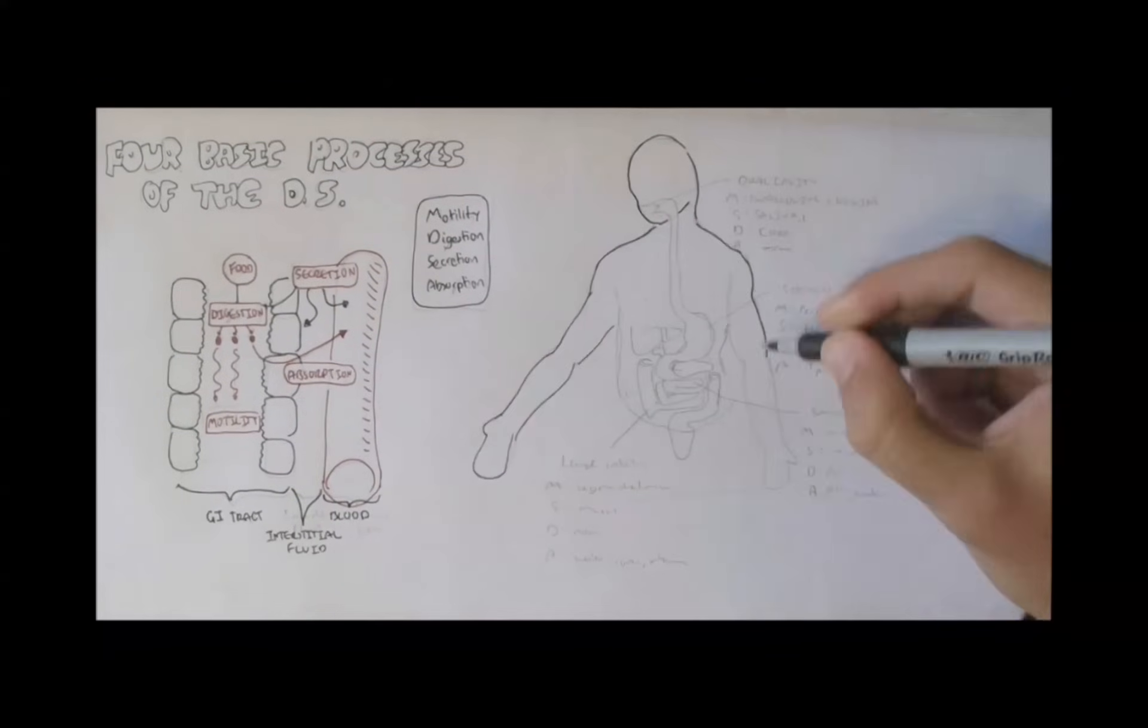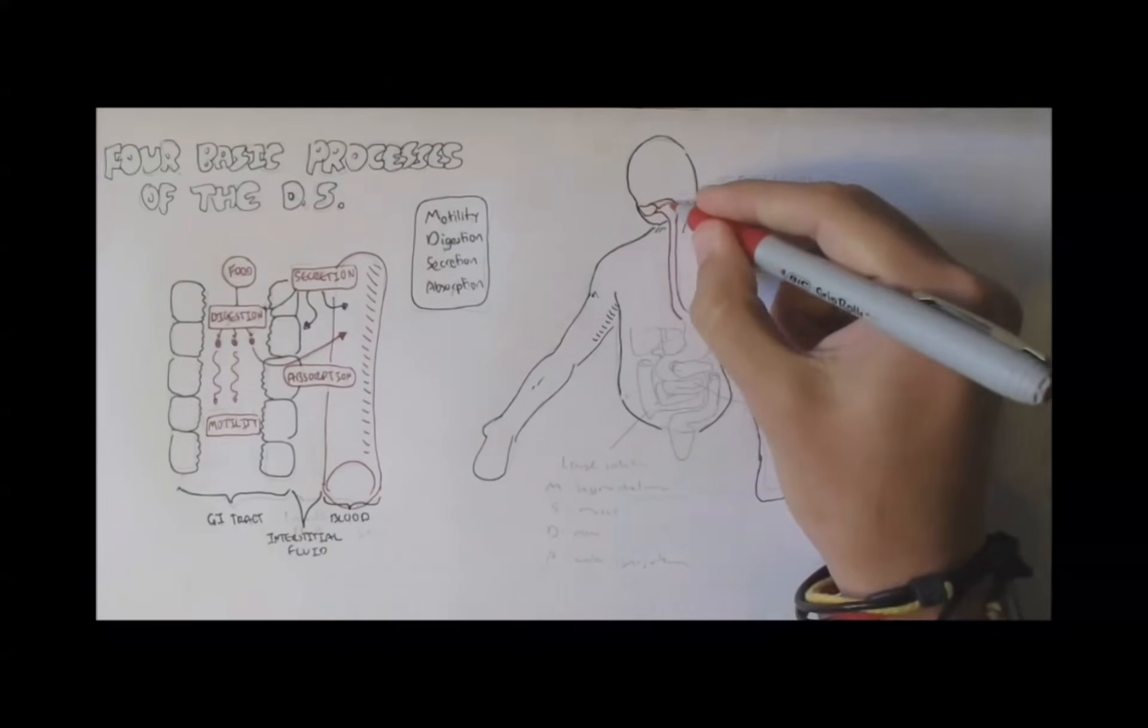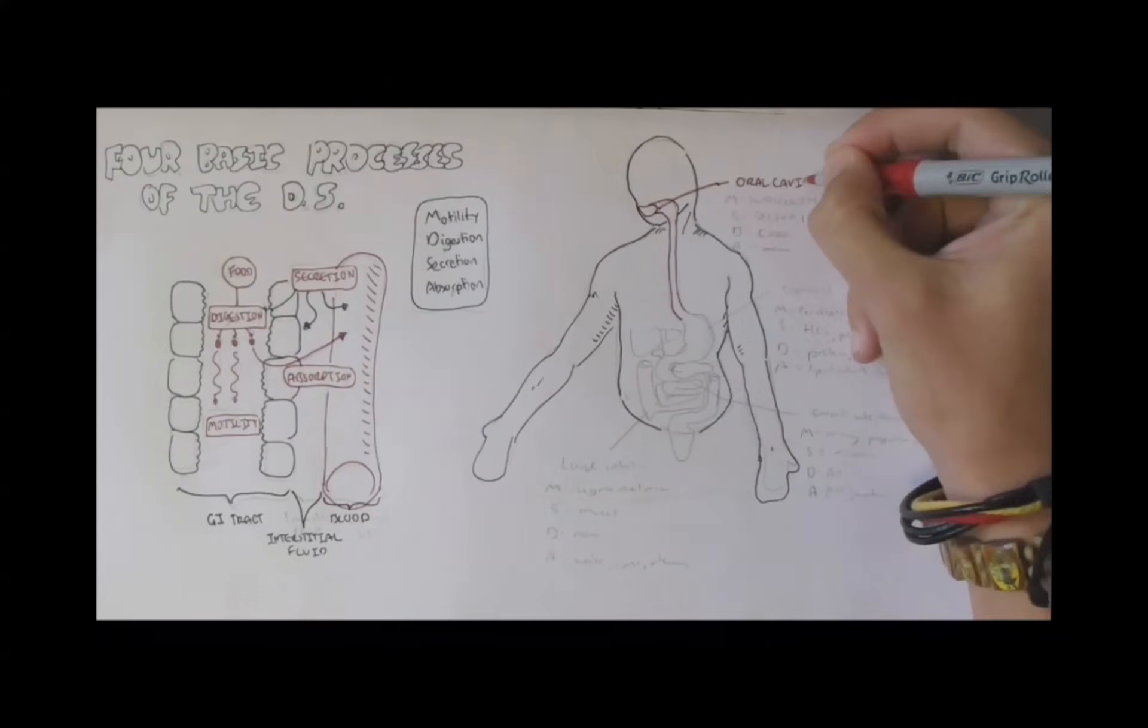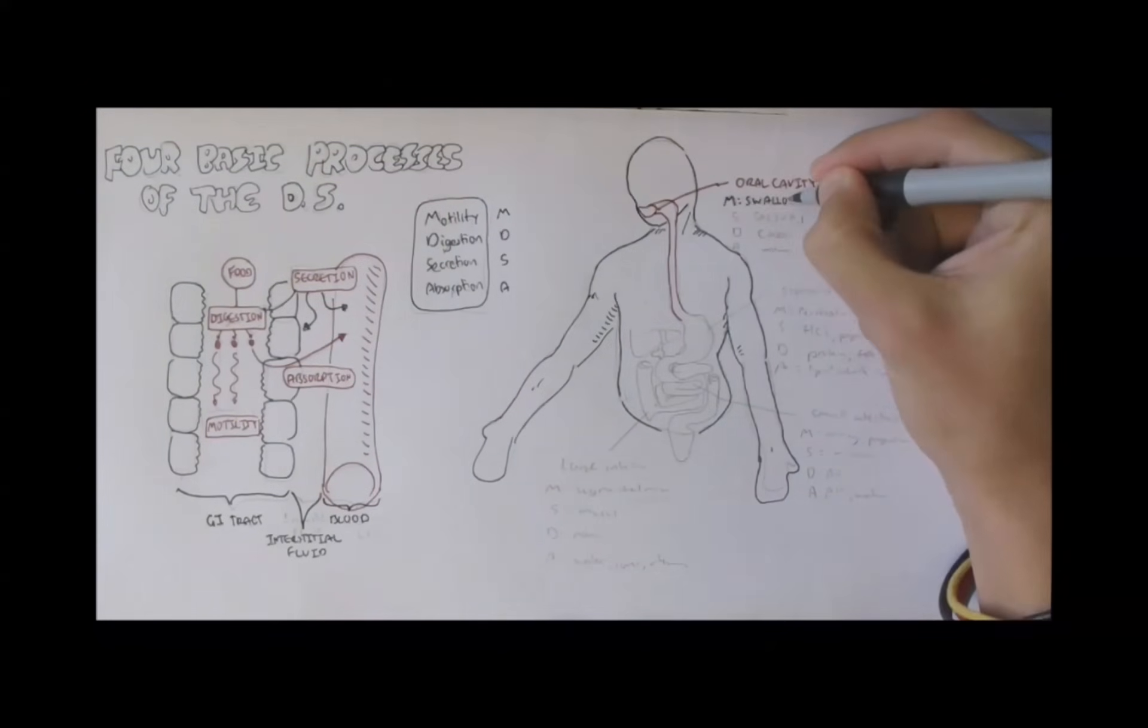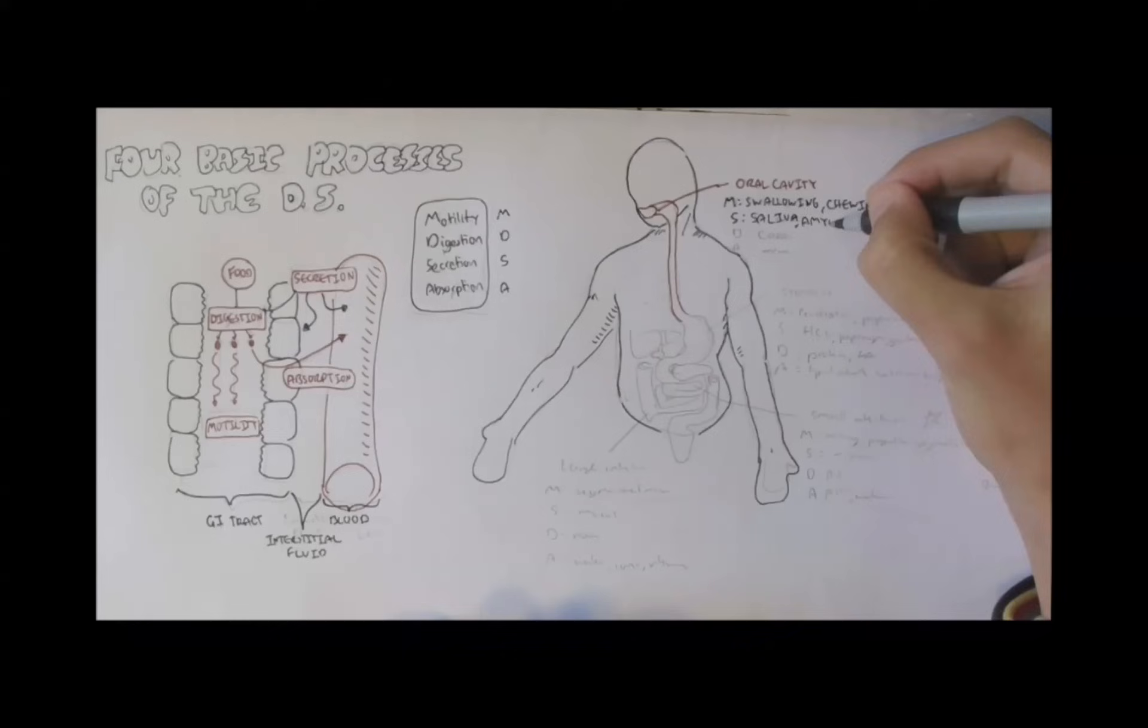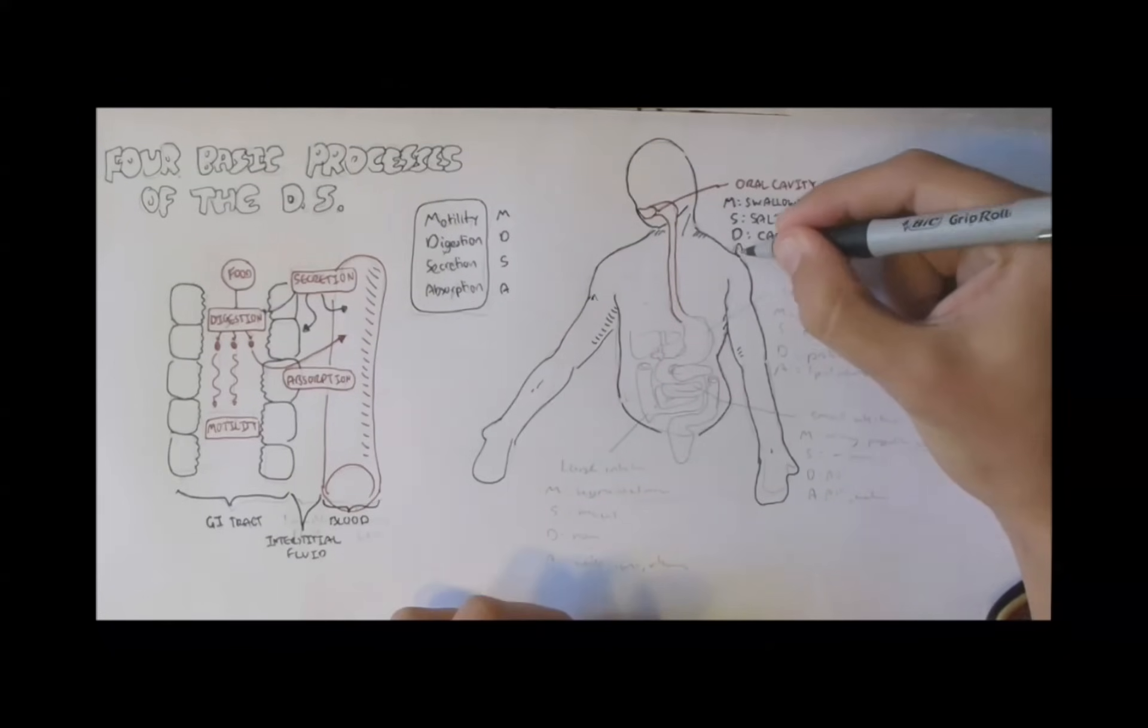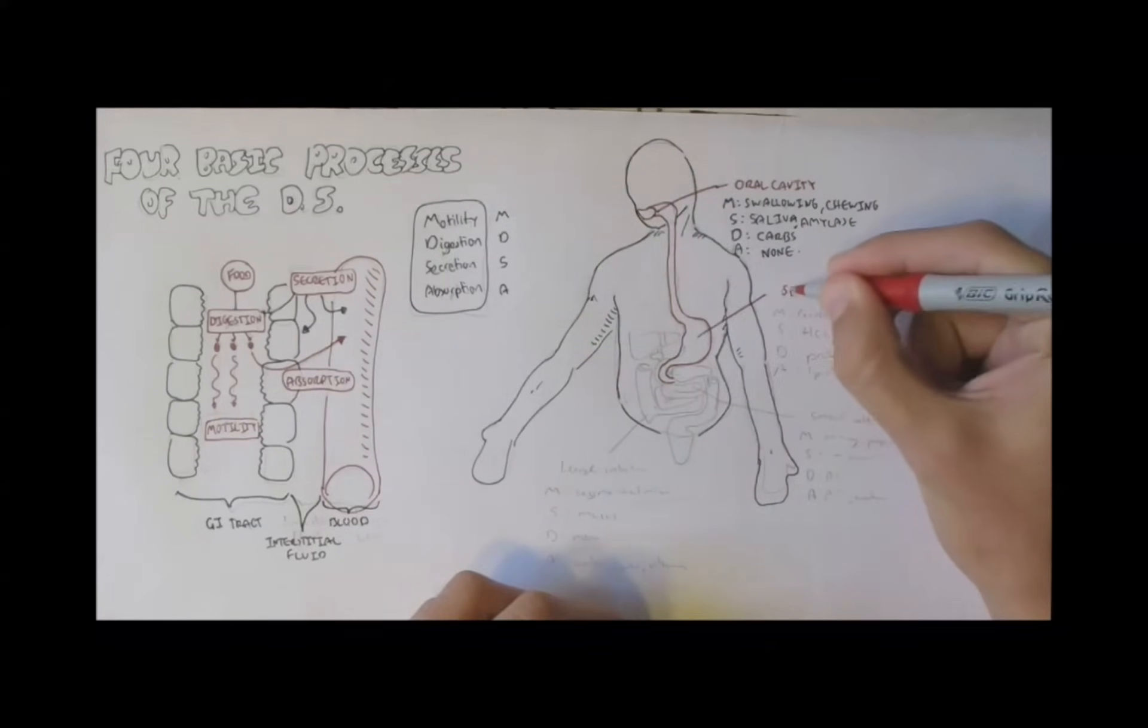Now looking at the overall process of motility, digestion, secretion, and absorption through the gastrointestinal tract, we'll begin with the oral cavity. So the oral cavity: the motility is swallow and chews. Secretion, it will secrete saliva and amylase, an enzyme which we will look into later on. It will digest a bit of carbs. It will absorb nothing.